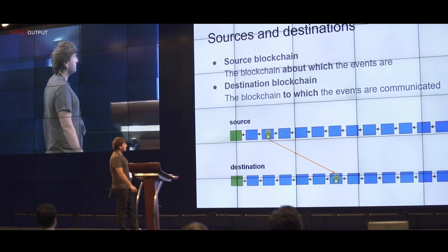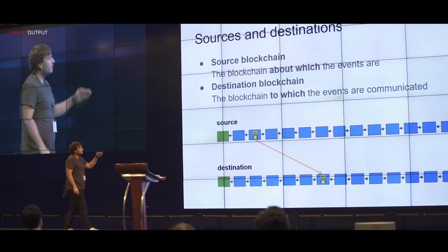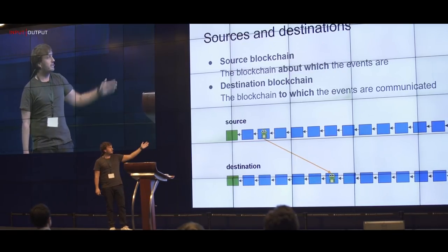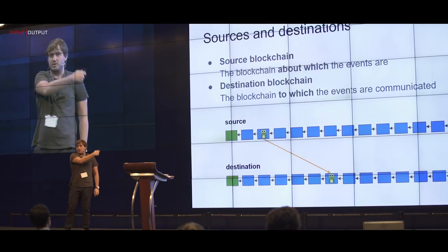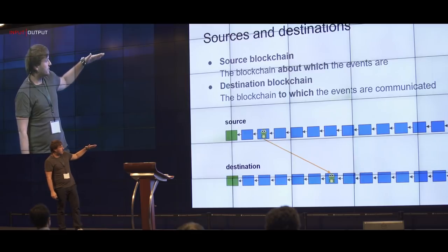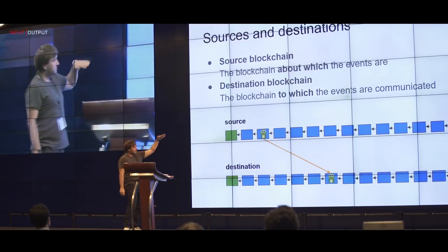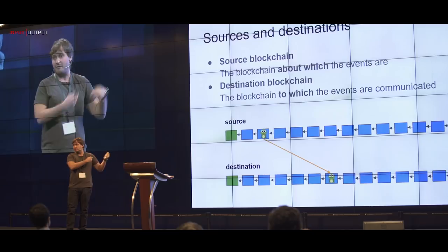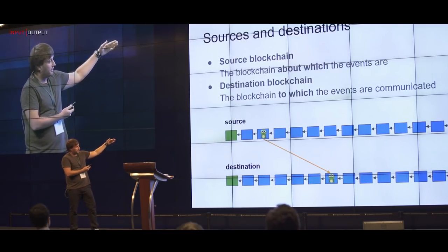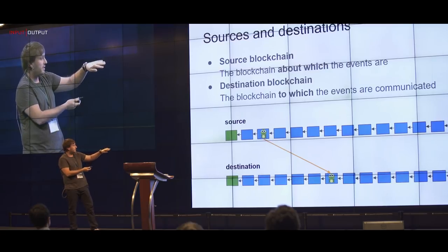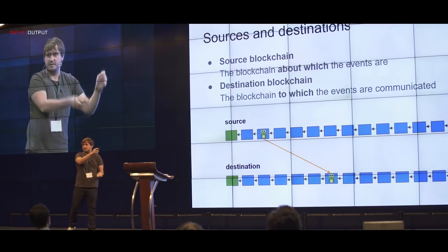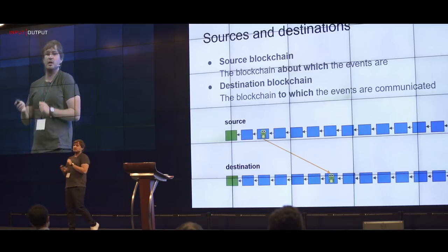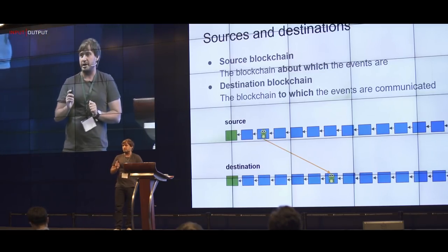When making these event transfers, we have a source blockchain and a destination blockchain — here Ethereum and Ethereum Classic. The top is the source and the bottom is the destination. However, this is just one event transfer. If you have the ability to transfer in both directions, the source and destination are reversed for the upward direction, so ideally you want bi-directional communication between your blockchains.